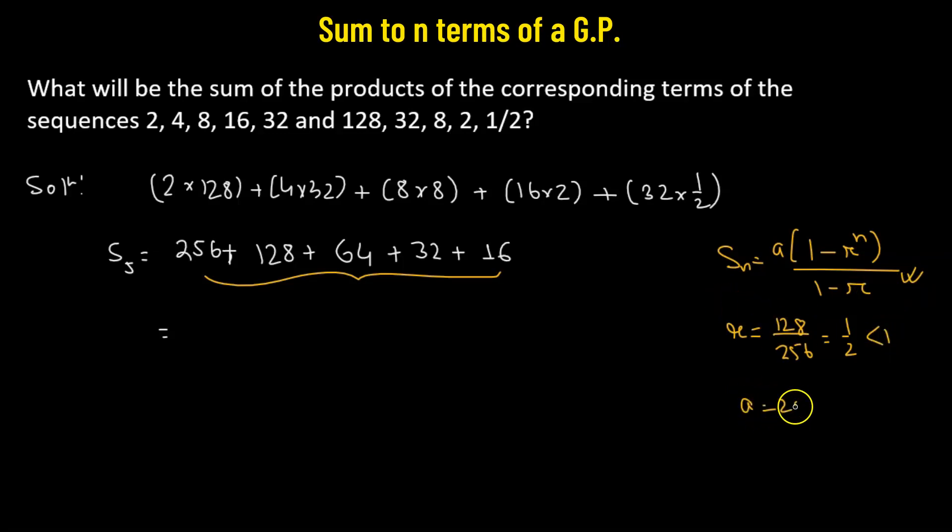Our first term, that's 256. So we'll substitute this value into our equation. So we have 256 multiplied to 1 minus half raised to the power of 5, all divided by 1 minus half.